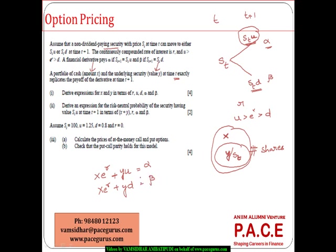From these two equations I can solve for x and y. Subtracting the equations gives y multiplied by (u minus d) equals alpha minus beta. So y comes out as (alpha minus beta) divided by (u minus d). I am getting y equals (alpha minus beta) divided by (u minus d).